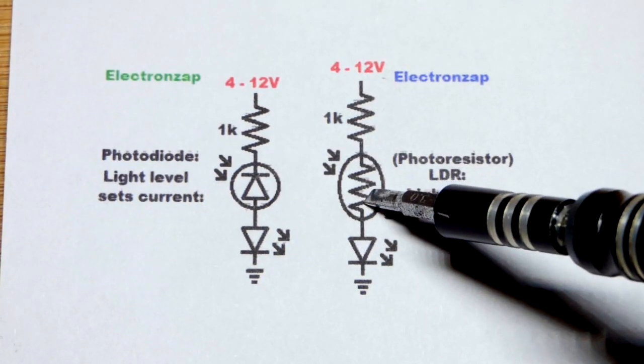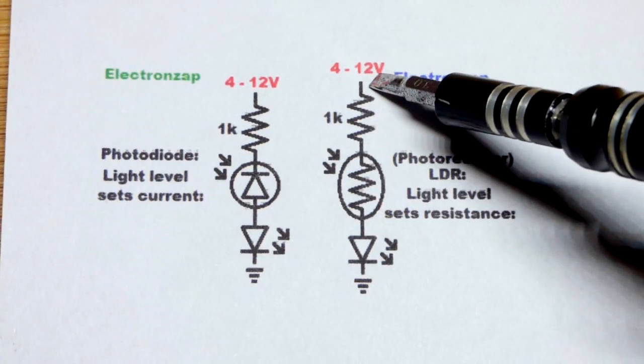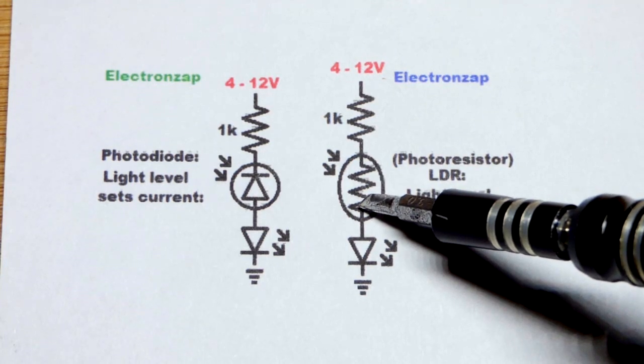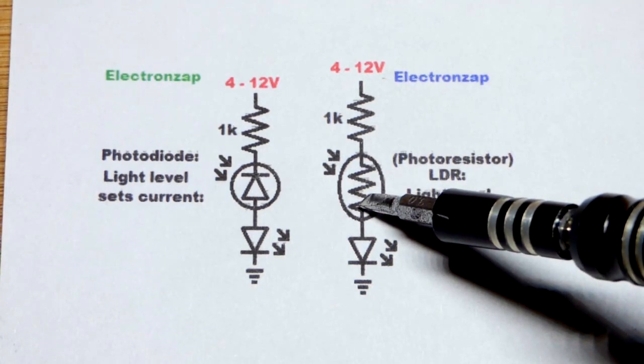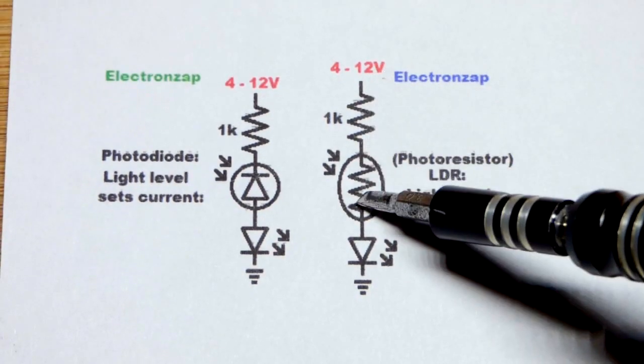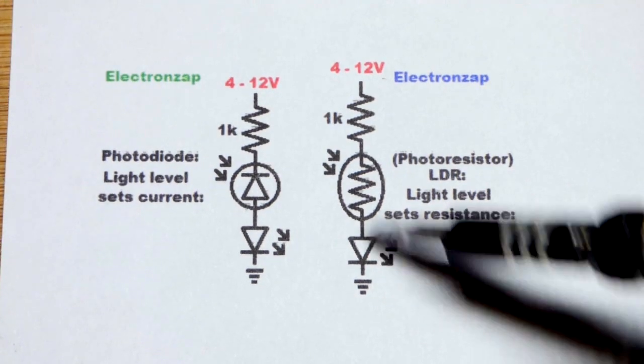Whereas the photoresistor or light dependent resistor, as you raise voltage, since its resistance is fixed at a certain light level—remember we're talking about if the light level is steady—if you raise the voltage, the resistance is the same, you're going to have more current. The LED is going to get brighter.